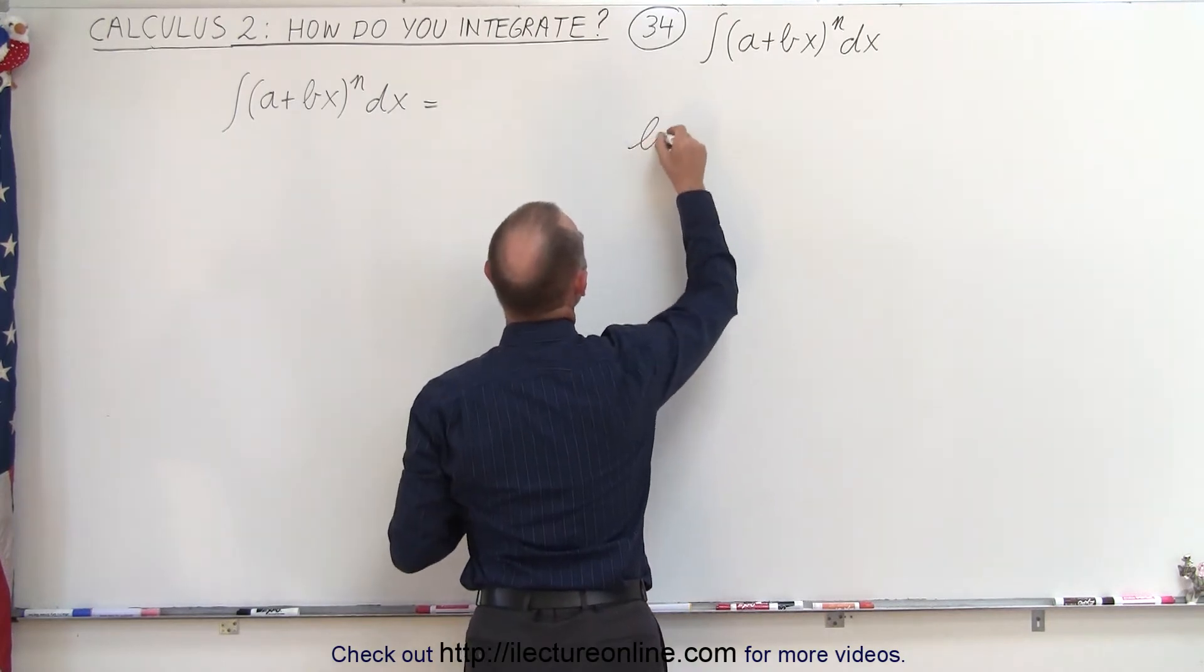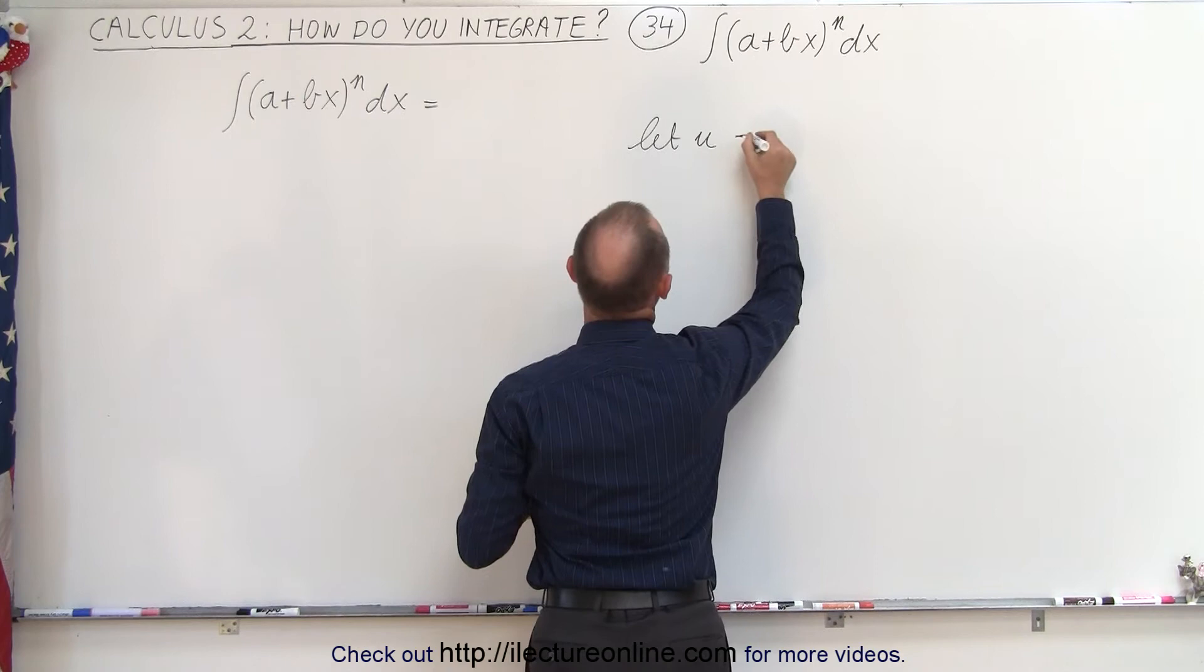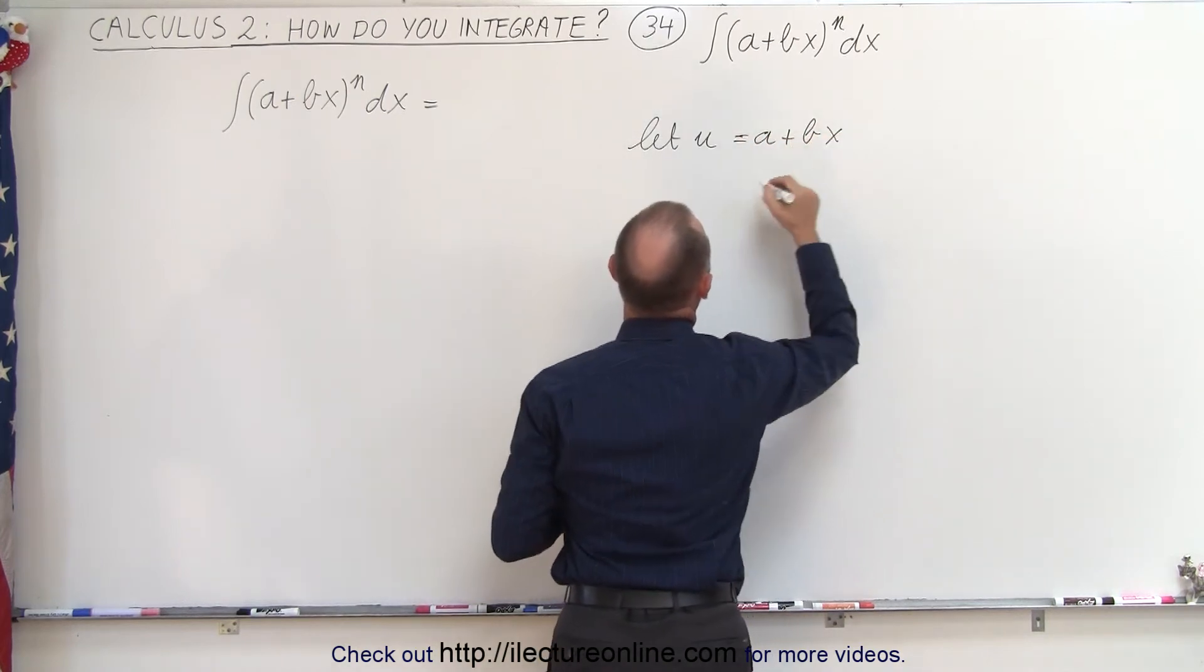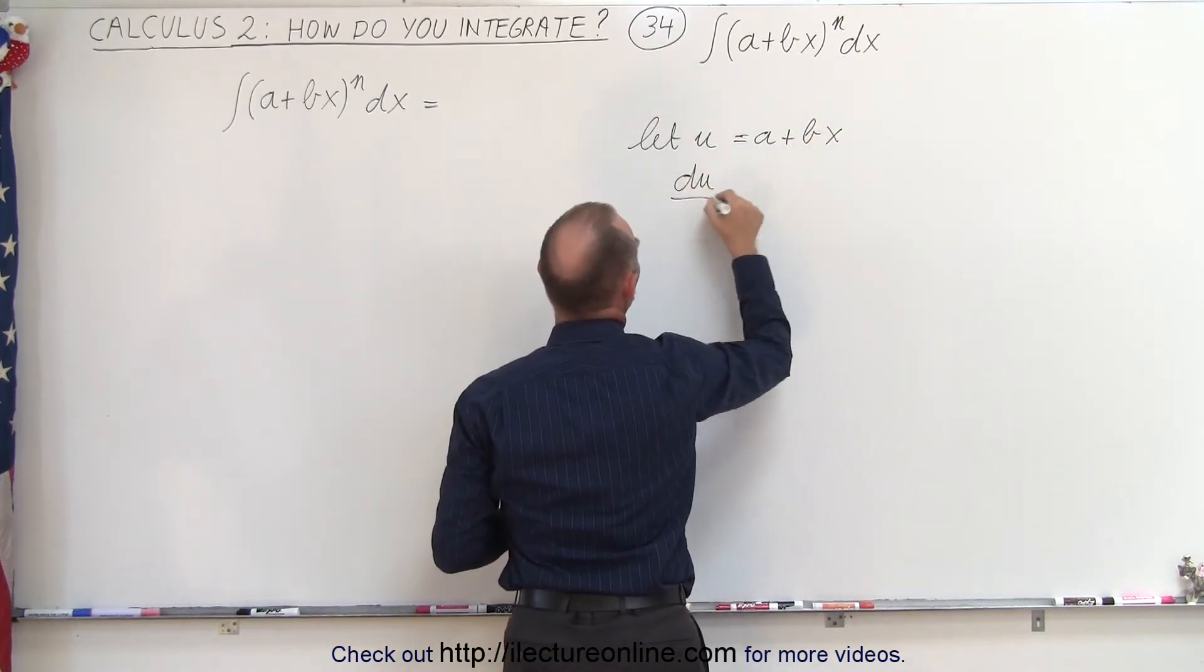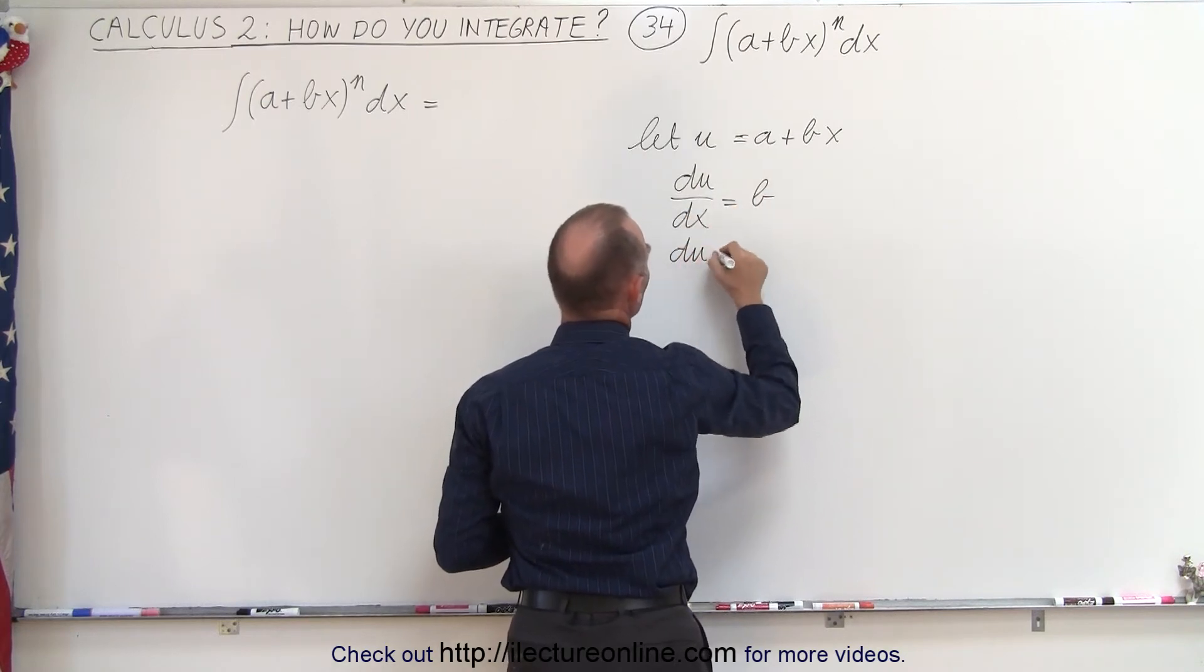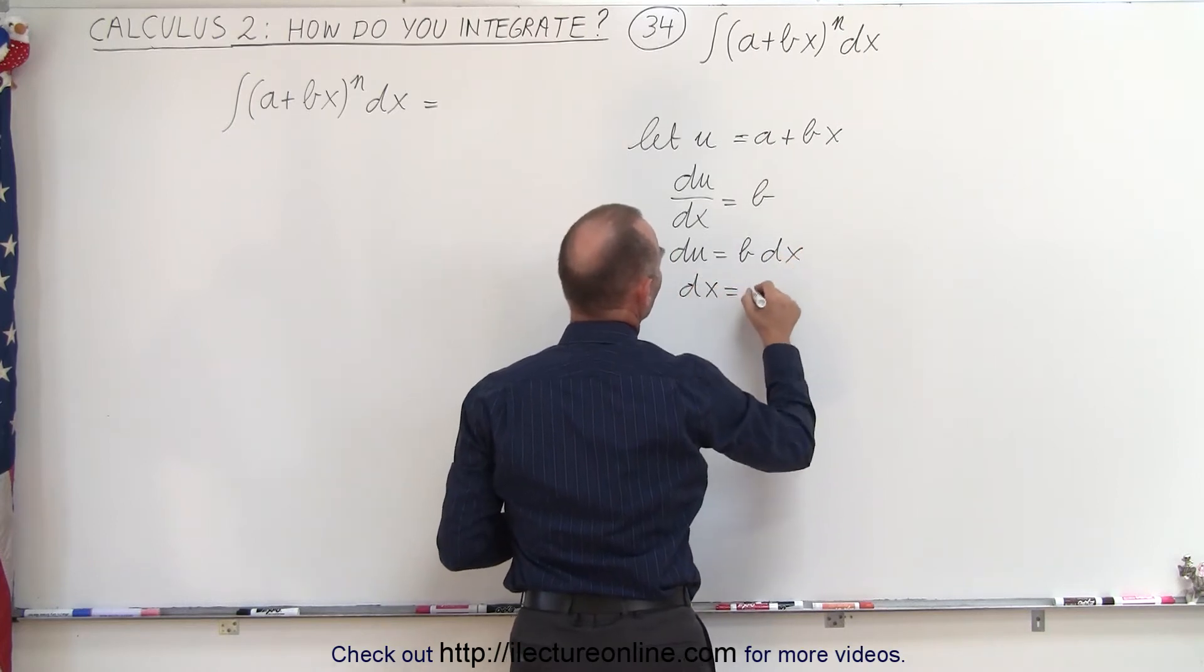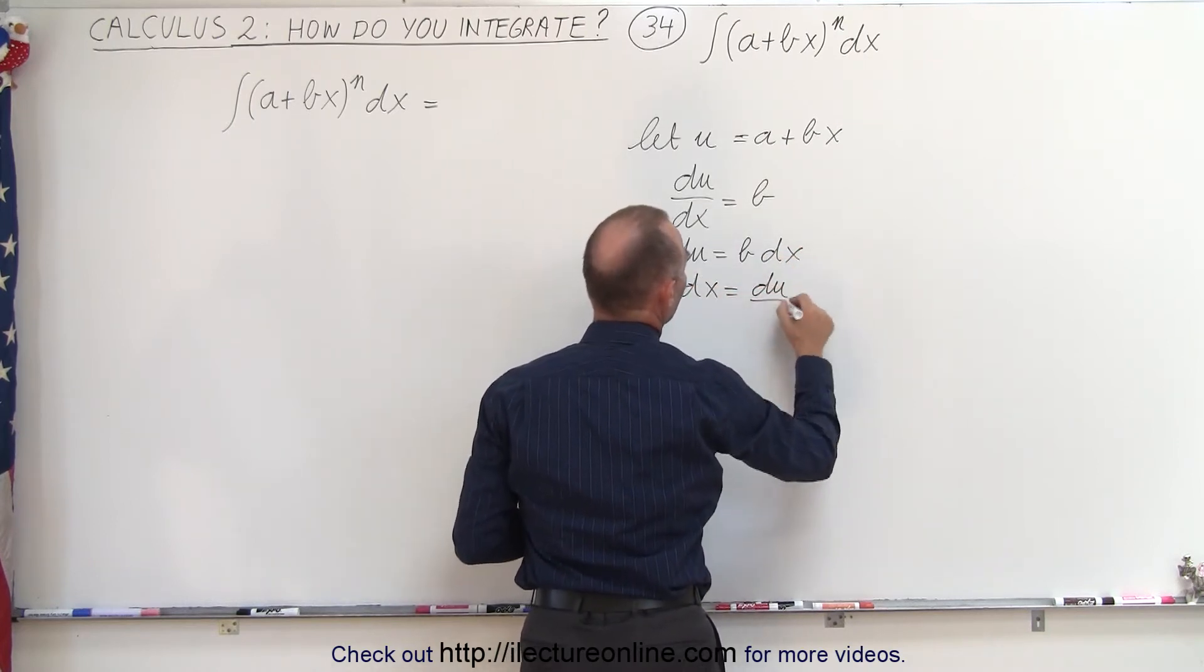Let u equal what's inside the parentheses, so u equals a plus bx. That means that du/dx is equal to b, which means that du is equal to b times dx, and dx is equal to du divided by b.